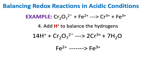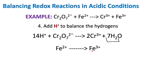Our next step is going to be adding in H+ to balance out hydrogens. On this side of the equation we can see that we have 14 hydrogens, because 7 times 2 is 14. If we have 14 hydrogens on the right hand side, we need 14 hydrogens on the left hand side, so we're going to add 14 H+. For our second half reaction we have no hydrogens, so we're not worried about adding in H+.